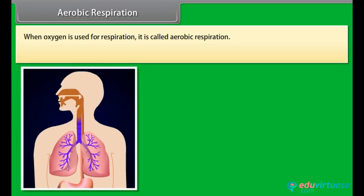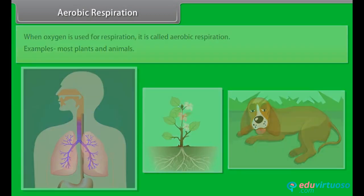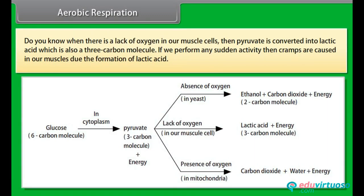When oxygen is used for respiration it is called aerobic respiration. Examples include most plants and animals. When there is a lack of oxygen in our muscle cells, pyruvate is converted into lactic acid, which is also a three-carbon molecule. If we perform any sudden activity, cramps are caused in our muscles due to the formation of lactic acid.